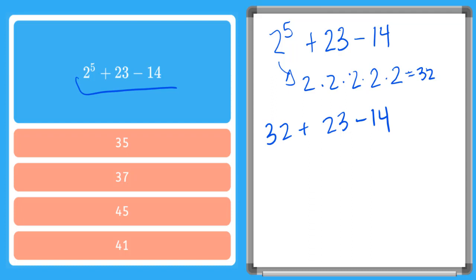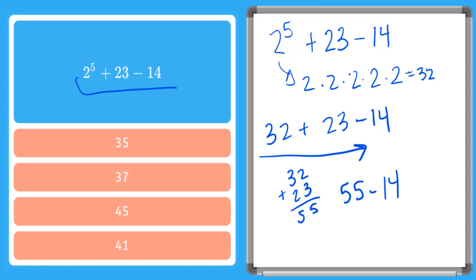We go to addition and subtraction, working left to right. First, thirty-two plus twenty-three equals fifty-five. Now fifty-five minus fourteen — written in standard form, five minus four is one, five minus one is four — so our answer is forty-one.